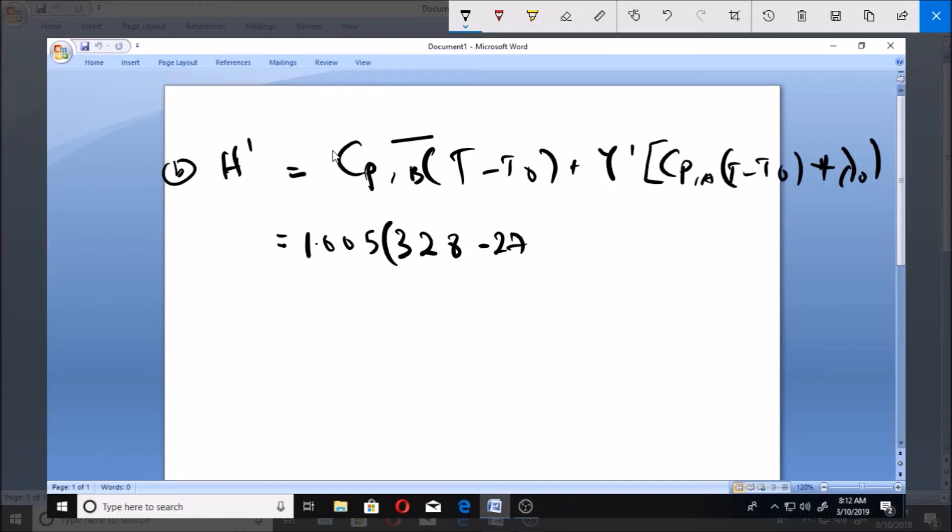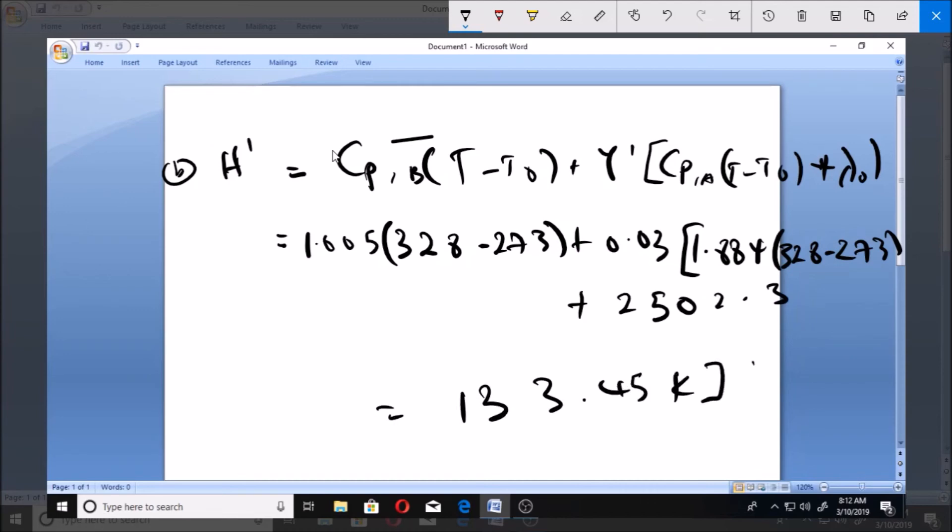...which is the reference, plus lambda, which we already found 0.03, to bracket 1.884 into bracket (328 minus 273) plus 2502.3. If we solve, we get 133.45 kilojoules per kg dry air. This is the enthalpy: 133.45 kilojoules per kg dry air.